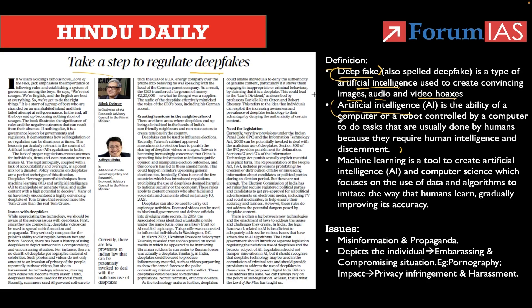Artificial intelligence works on the basic principle of machine learning. Machine learning is a tool to create AI in computer science, focusing on the use of data and algorithms to imitate the way humans learn, gradually improving its accuracy. Just as humans learn shortcuts over time and accomplish tasks more efficiently, machines function through codings and algorithms. This is machine learning.